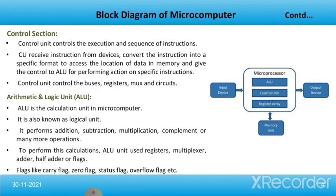Looking at the microprocessor block in detail, there are three sections: the control unit, ALU, and register area. The control unit controls the execution and sequence of instructions. It receives instructions from devices, converts the instruction into a specific format to access the location of data in memory, and gives control to the ALU for performing action on specific instructions. The control unit also controls the buses, registers, muxes, and circuits.